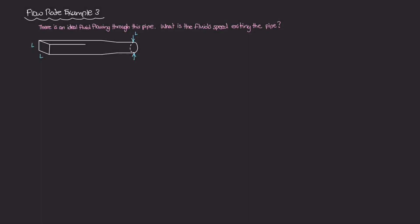Okay, this one's going to be a pretty fun one. So we have this pipe, and this is kind of a special pipe because at the entrance of the pipe, so here on the left, the cross-sectional area of this pipe is a square, and the sides of the square are L, so the area of this cross-section is L squared.